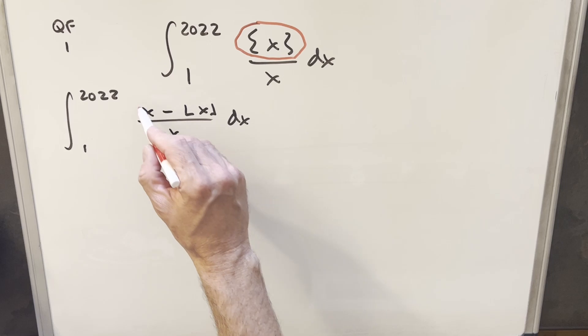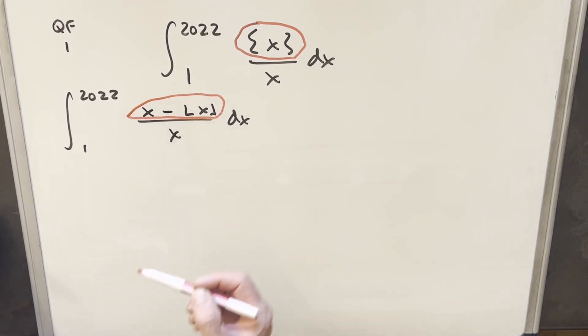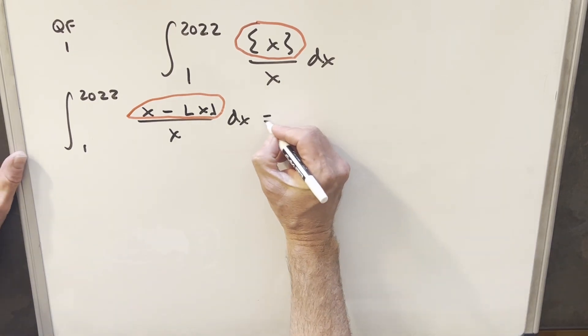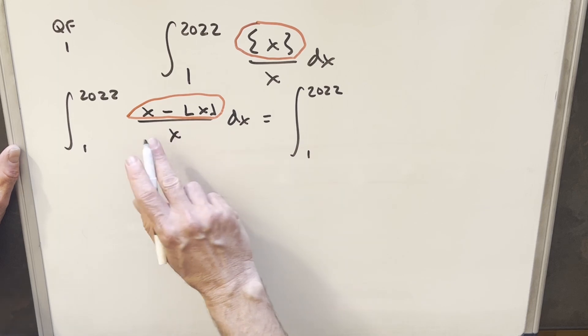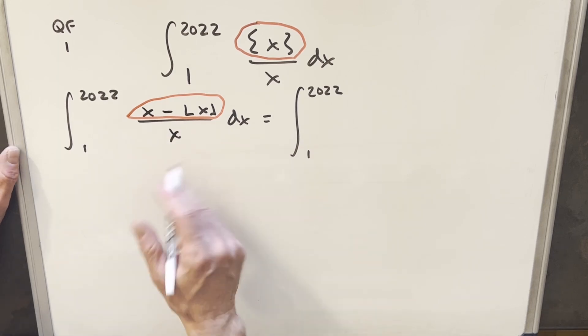Now I've just plugged in that value that we found on the previous board for the floor function. So we'll use that instead. And what I can do with that, that's going to allow me to split this into two integrals. So what I can do, so for the first one, we'll just split up this fraction.